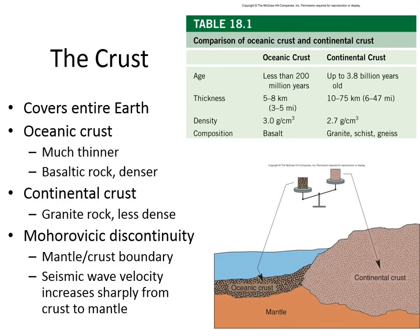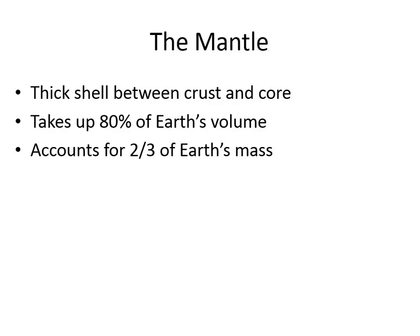That's actually coming up on the next slide. Breaking down the layers of the Earth's interior, between the mantle and the crust we have this discontinuity layer called the Mohorovičić discontinuity. The mantle is under the crust. The mantle actually has a couple of different types of textures to it — the mantle is about 80% of the Earth's volume and two-thirds of its mass.